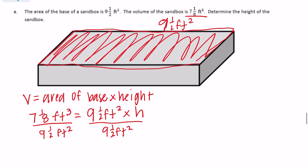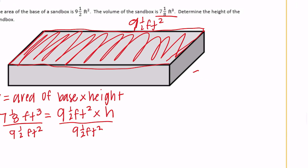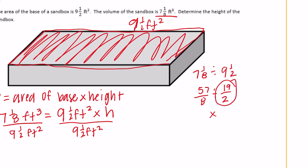Let's do 7 and 1/8 divided by 9 and 1/2. I'm going to make them improper fractions. 7 times 8 is 56, plus 1 is 57 eighths, divided by 9 times 2 is 18, plus 1 is 19 halves. Remember, we're going to flip and then multiply, so make that 2/19 times 57/8.